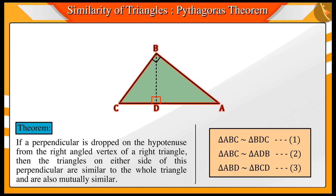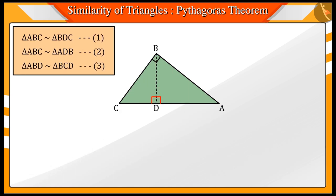As you know in the previous video, if a perpendicular is dropped at the hypotenuse from the right-angled vertex of a right triangle, then the triangles on either side of this perpendicular are similar to the full right-angled triangle and also mutually similar.